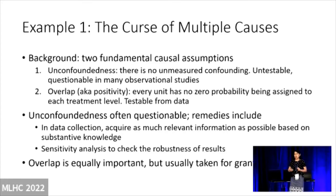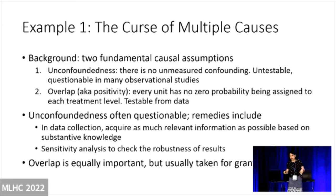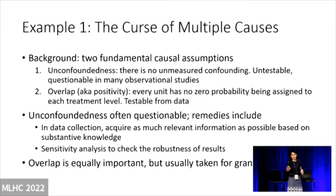To explain this, I need to give a little background. In causal inference, most studies make two assumptions. The first assumption is unconfoundedness — basically, there is no unmeasured confounding. This is a very strong assumption, and it's untestable. It's probably questionable in many observational studies, but the large majority of causal analyses make this assumption. This attracts criticism — people always ask: how can you make sure unconfoundedness really holds? The key point is that it's untestable, questionable, but widely used.